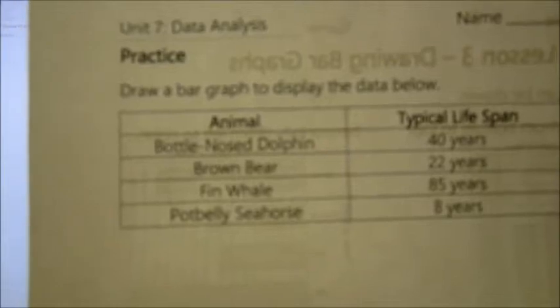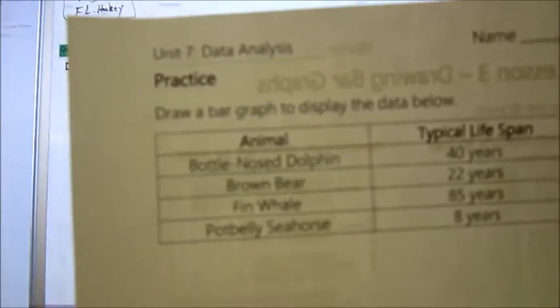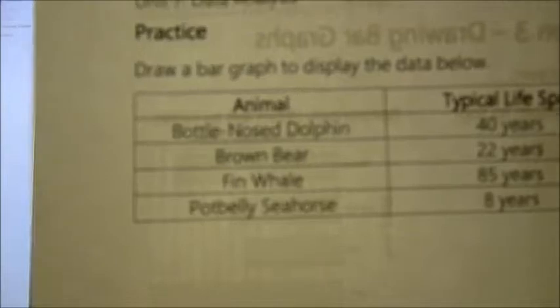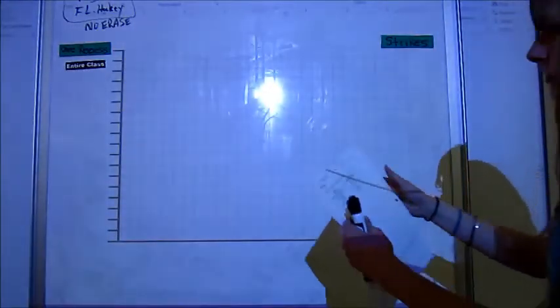So we've got typical lifespan of animals. We've got a bottlenose dolphin, brown bear, fin whale and a potbelly seahorse. So we've got 40 years, 22 years, 85 years and 8 years. So we need to draw a bar graph to display the data.